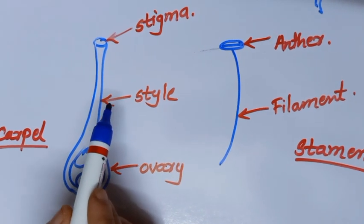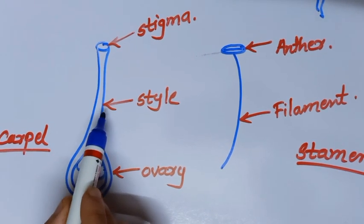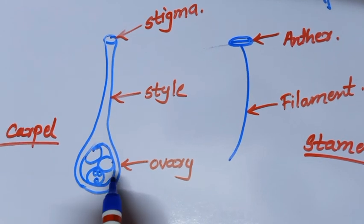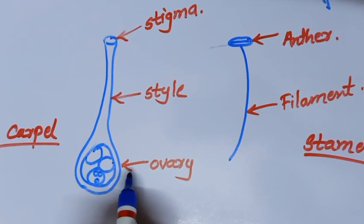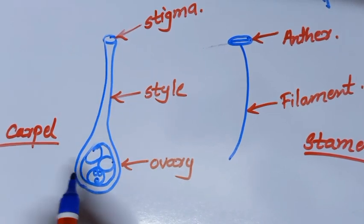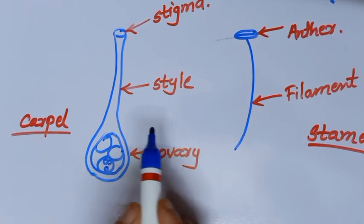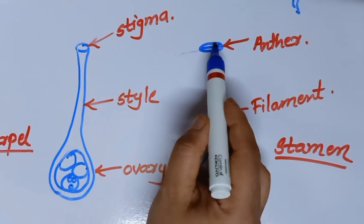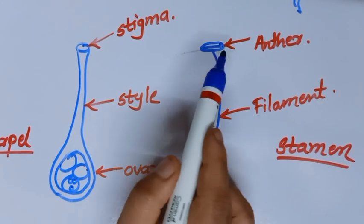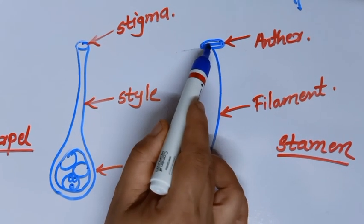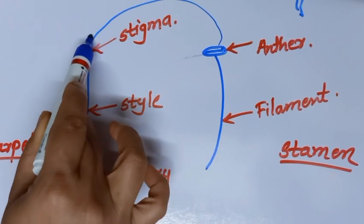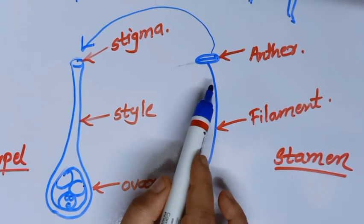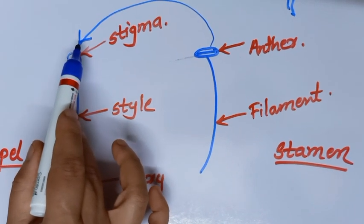In the carpel, 3 different parts are there. One is stigma. In the middle, there is a stalk called the style, and below the style at the base, there is a swollen part called the ovary. Pollen grains are produced and stored inside the anther. Anthers are bilobed. The transfer of pollen grain from the anther of the stamen to the stigma of the carpel is called pollination.